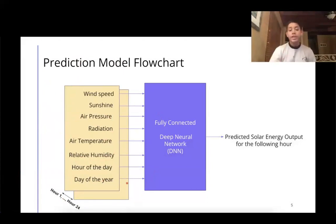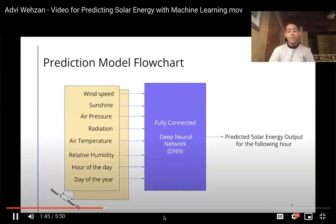We're taking all this data and plugging it into a fully connected neural network, which basically does a lot of mathematical operations on all of this data to predict our solar energy output for the following hour.